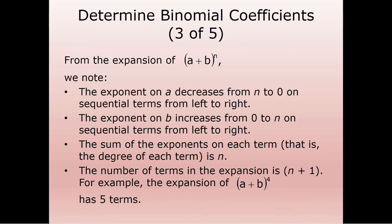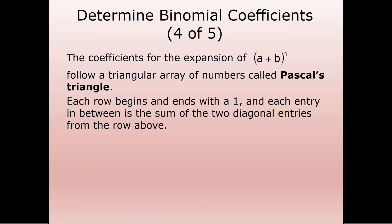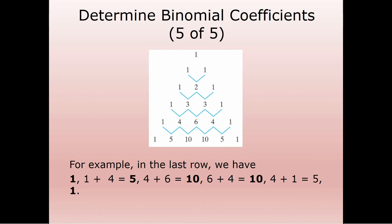One thing we're going to talk about with our coefficients is that there's also a pattern there. It follows a triangular array of numbers called Pascal's triangle. Each row begins and ends with a one, and each entry in between is the sum of the two diagonal entries from the row above it. We start with ones, we end with ones. So: one plus two equals three, two plus one equals three, one plus three equals four, three plus three equals six, three plus one equals four. We can draw this triangle out as far as we want by just following this pattern.